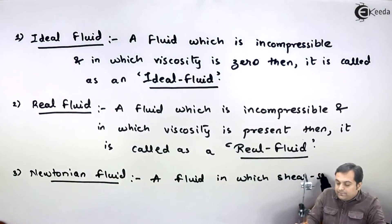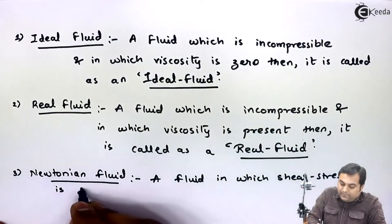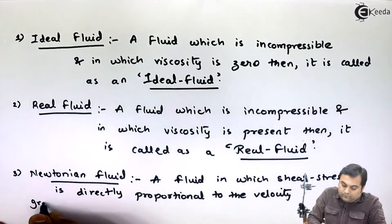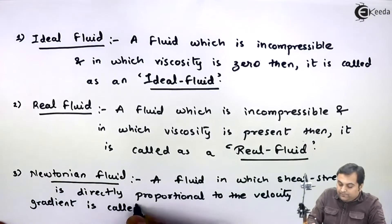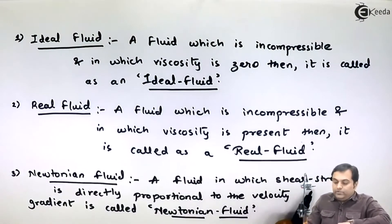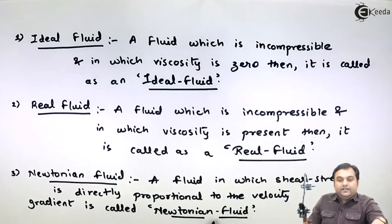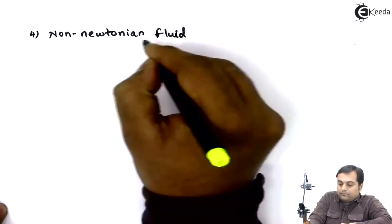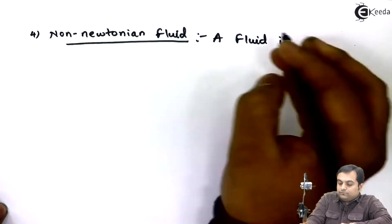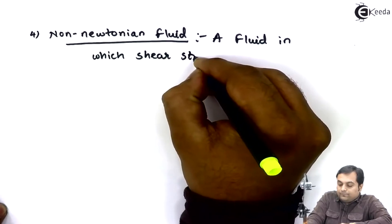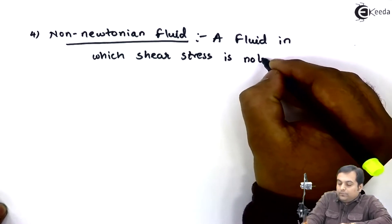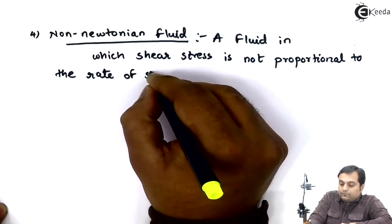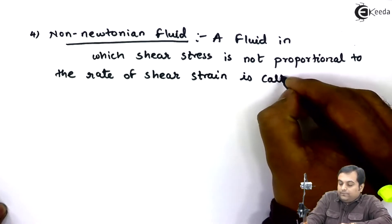Next is Newtonian fluid. A fluid in which shear stress is directly proportional to the velocity gradient is called a Newtonian fluid. Next, non-Newtonian fluid. A fluid in which shear stress is not proportional to the rate of shear strain is called a non-Newtonian fluid.